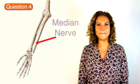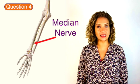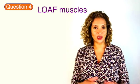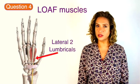Question four is the median nerve which is one of the three major nerves that supply the forearm and hand. In the hand the median nerve supplies the LOAF muscles which is a great mnemonic to help you remember them. L stands for the lateral two lumbricals.